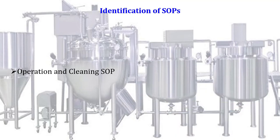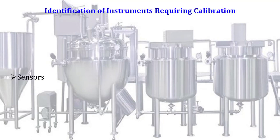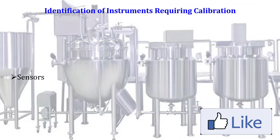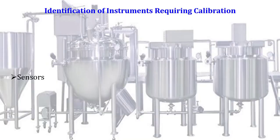Identification of SOPs is the next stage of installation qualification, in which we identify the SOP for operation and cleaning, and preventive maintenance SOPs. The next stage is identification of instruments requiring calibration. In case of an ultra-low deep freezer, only two components or instruments require calibration. In case of other equipment, there are a number of sensors or gadgets that need to be calibrated prior to operational qualification.